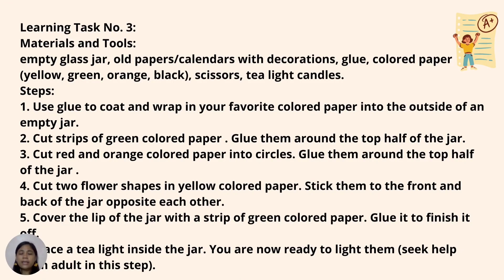For Learning Task 3, you will need the following materials and tools: an empty glass jar, old paper or calendars with decoration, colored paper in blue, yellow, green, orange, and black, scissors, and tea light candles. Steps: Number 1, use glue to coat and wrap your favorite colored paper around the outside of the empty jar. Number 2, cut strips of green colored paper and glue them around the top half of the jar. Number 3, cut red and orange colored paper into circles and glue them around the top half of the jar. Number 4, cut two flower shapes in yellow colored paper and stick them to the front and back of the jar opposite each other. Number 5, cover the lip of the jar with a strip of green colored paper and glue it to finish. Number 6, place a tea light inside the jar and you are ready to light it — seek help from adults for this step. Here is the sample output.